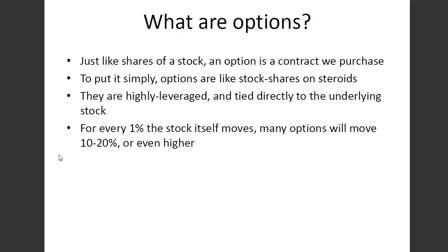Just like a share of a stock, an option is simply a contract that we purchase. So you can either — take Apple stock for example — you can go buy shares of Apple, or you can go buy options on Apple. The main difference here between buying a share and an option, to put it simply in plain English, is that options are like stocks on steroids.